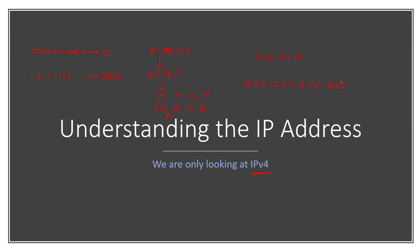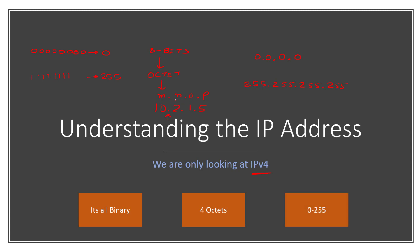So what have we talked about so far? First, it's all binary — when it comes to computers, we are only talking about binary. The four components in an IPv4 address are called four octets, and each of those octets can range from 0 to 255, with 0 being the lowest value and 255 being the highest.